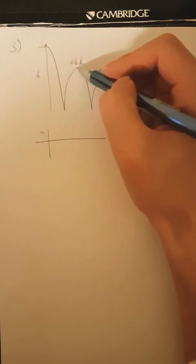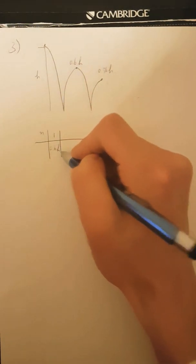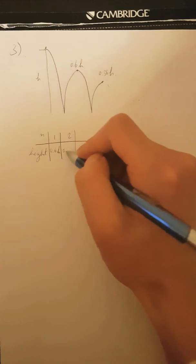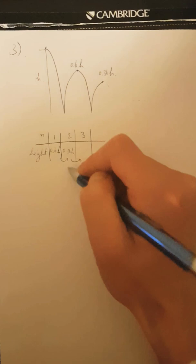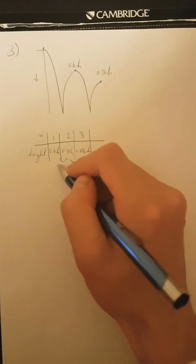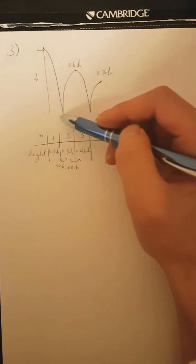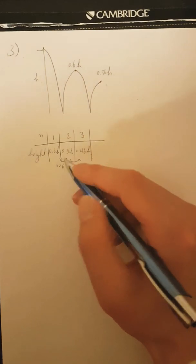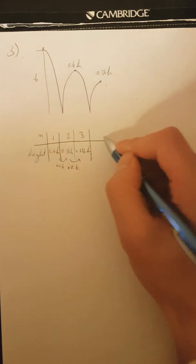After the first bounce, it goes up to 0.6H. And then after the second bounce, it goes to 0.36H. And the third bounce is going to be 0.6 of that, which is like 0.216H. So you can see the common ratio is actually going to be 0.6, because every time it bounces, it's going to go up 60% of the original height. So it's going to be a geometric progression with a common ratio of 0.6.